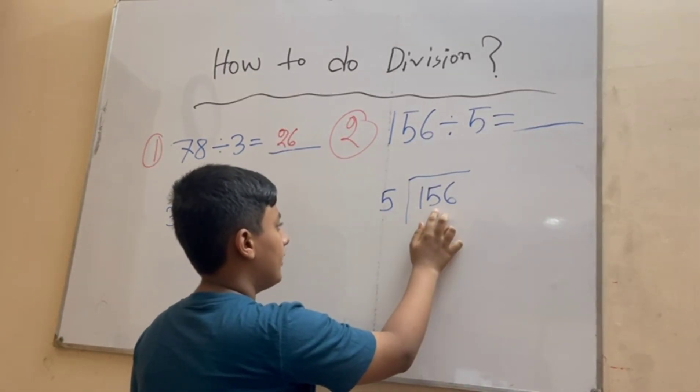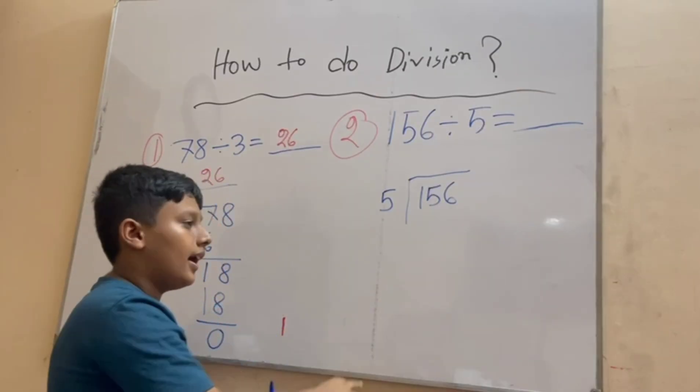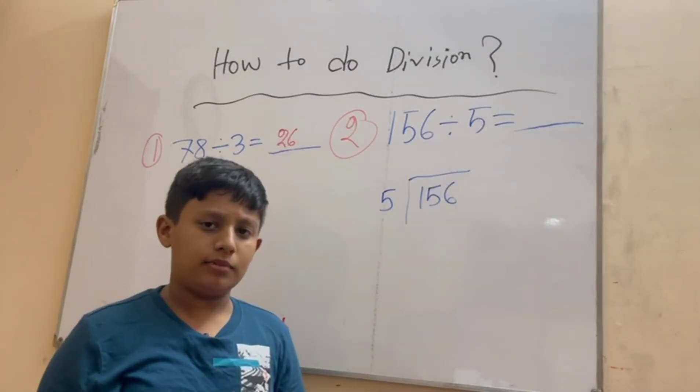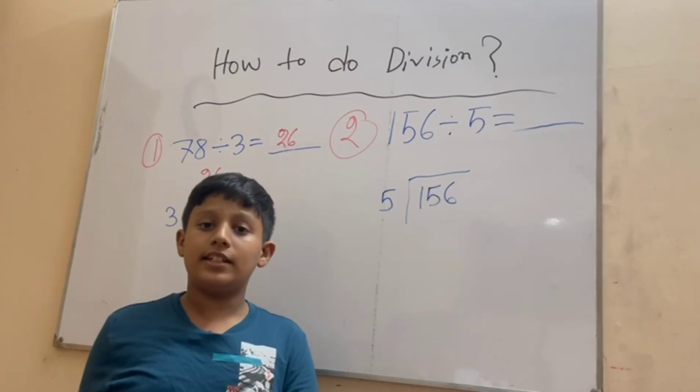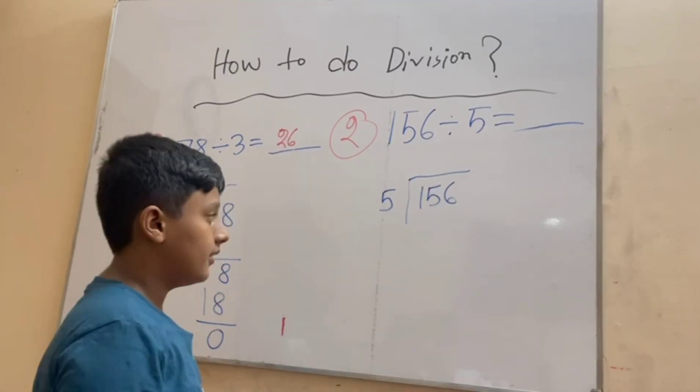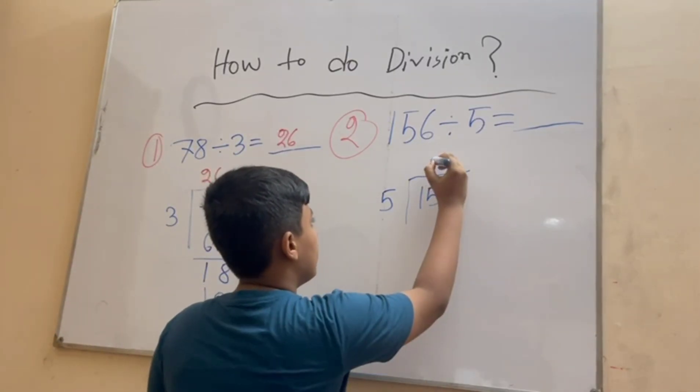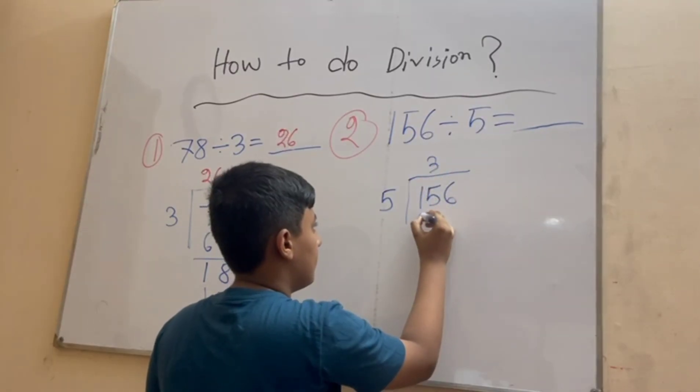As you know the five times table, we have to count the five times table: five ones are five, five twos are ten, five threes are fifteen.